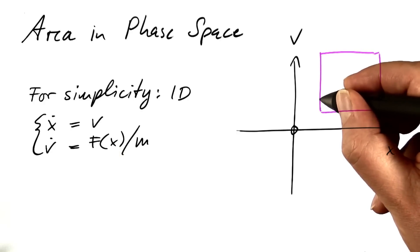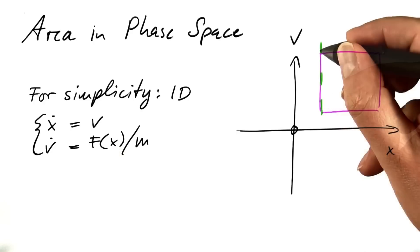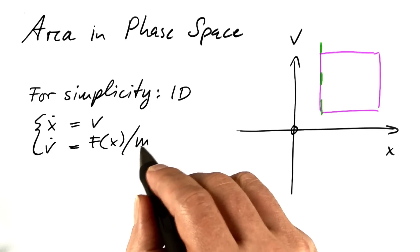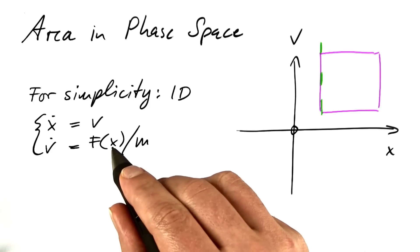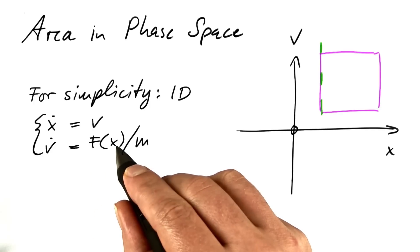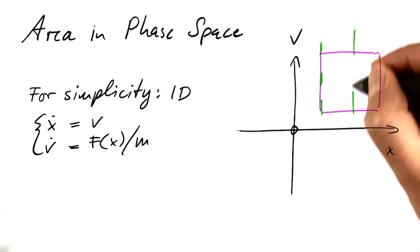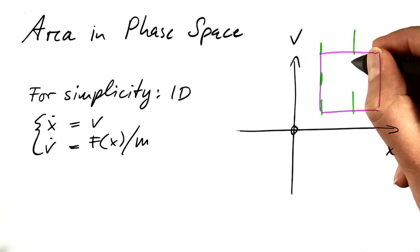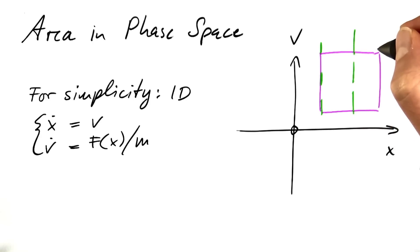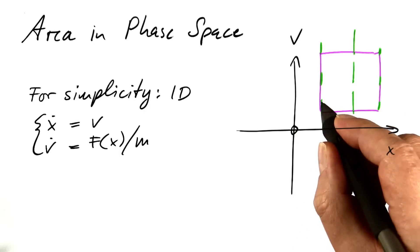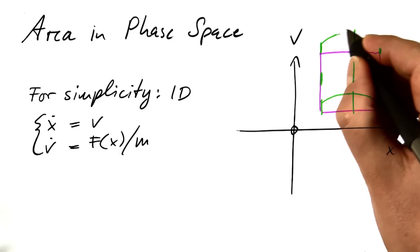If this velocity is changed by that much, also this velocity will change by that much, and that velocity will change by that much. The rate of change does not depend on v. It just depends on x. So, we could have a different rate of change here, but it has to be the same for all velocities. And maybe there's a different rate of change here, and again it has to be the same for all velocities. So, our purple rectangle is transformed into something that may look like this.